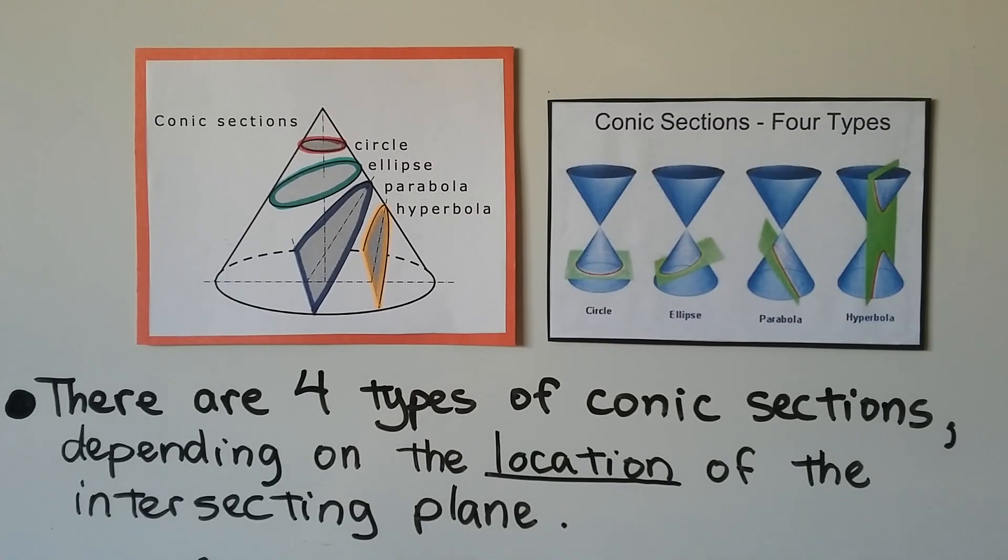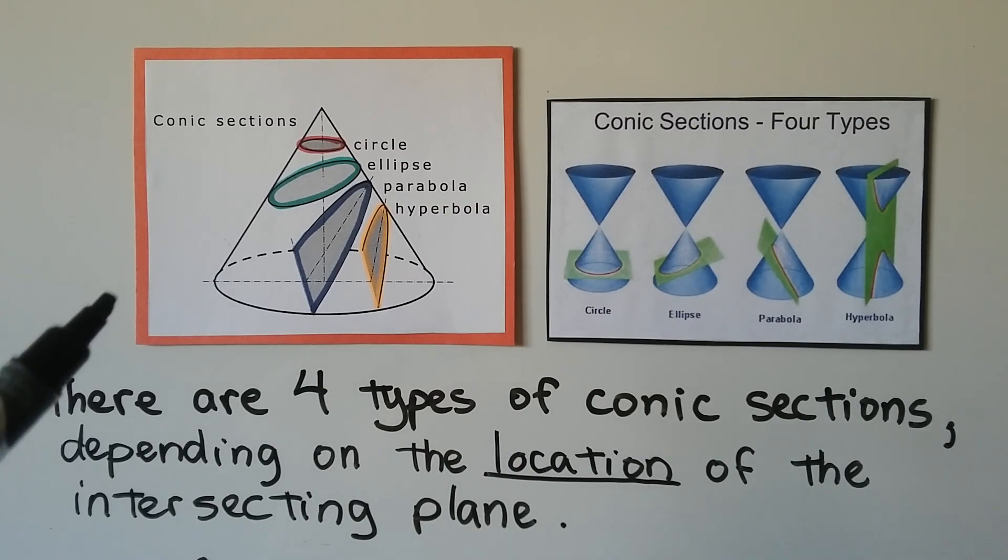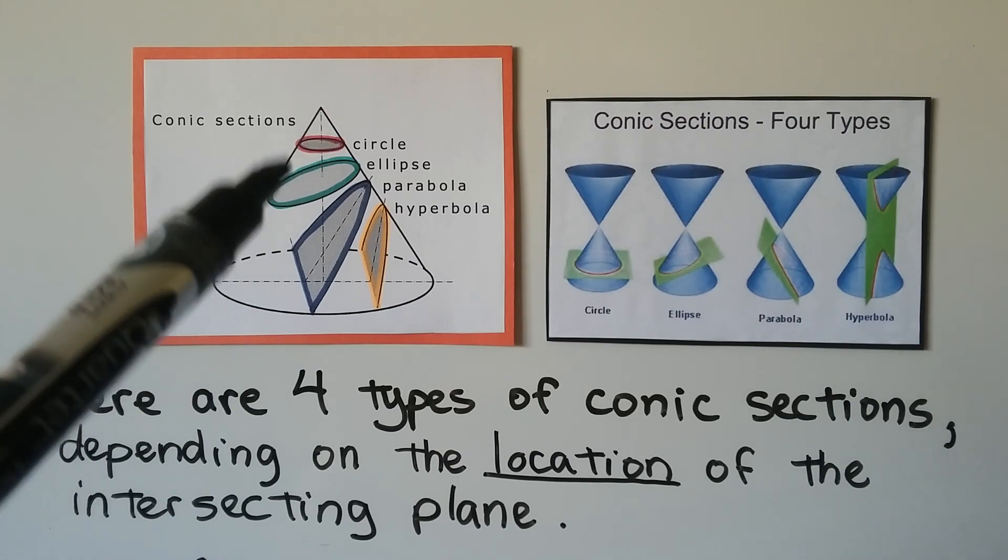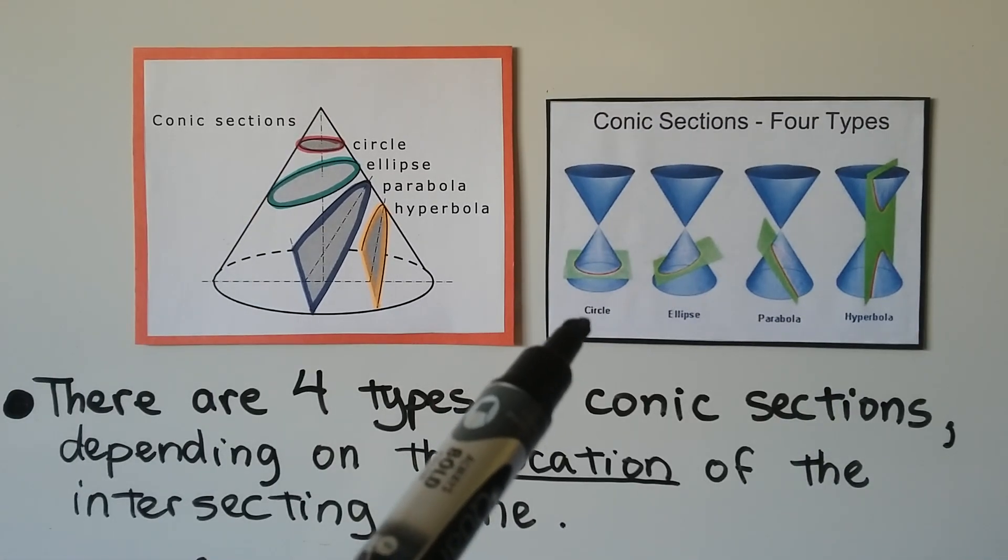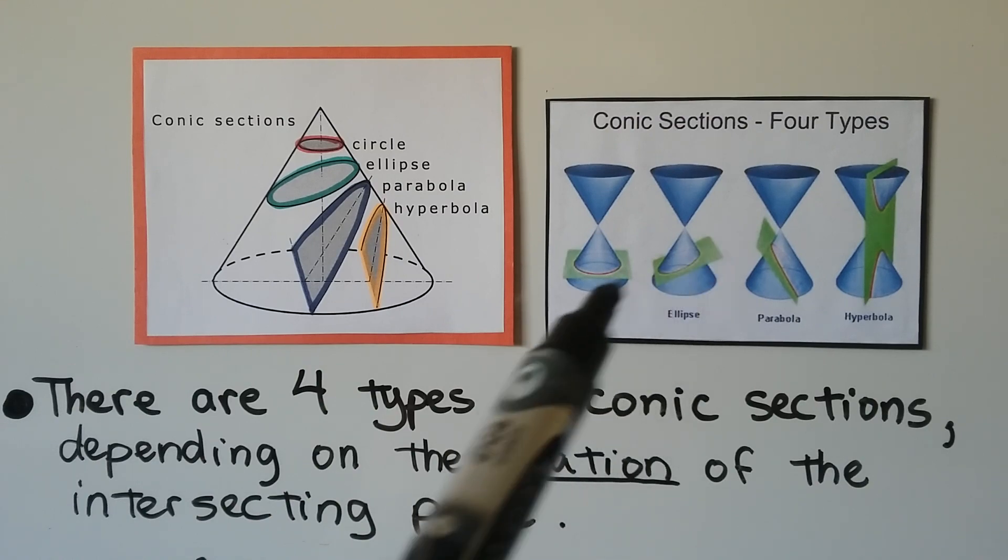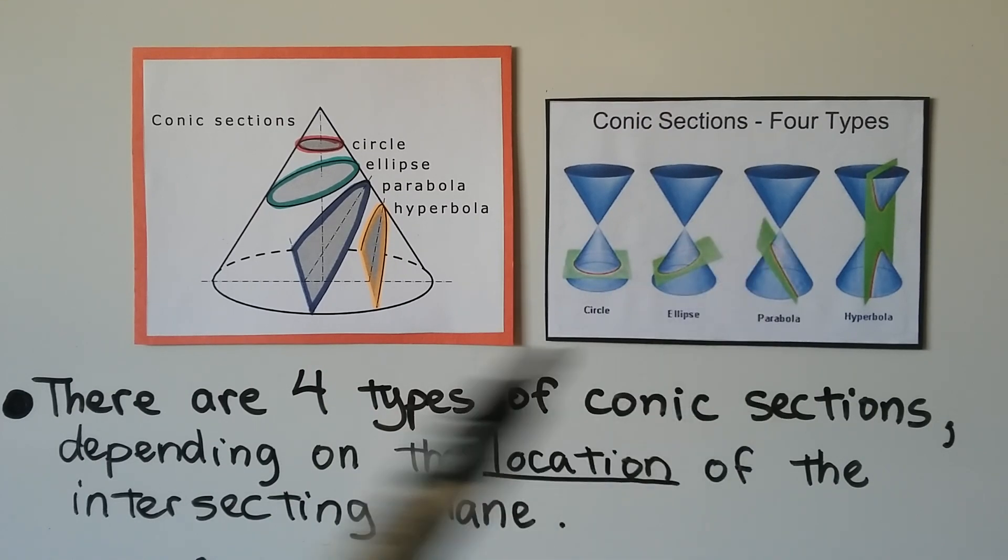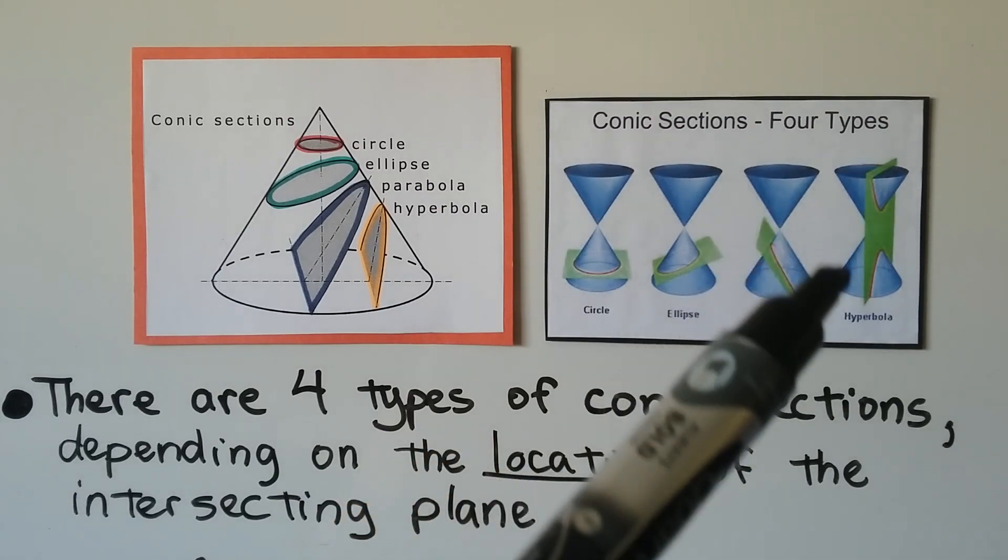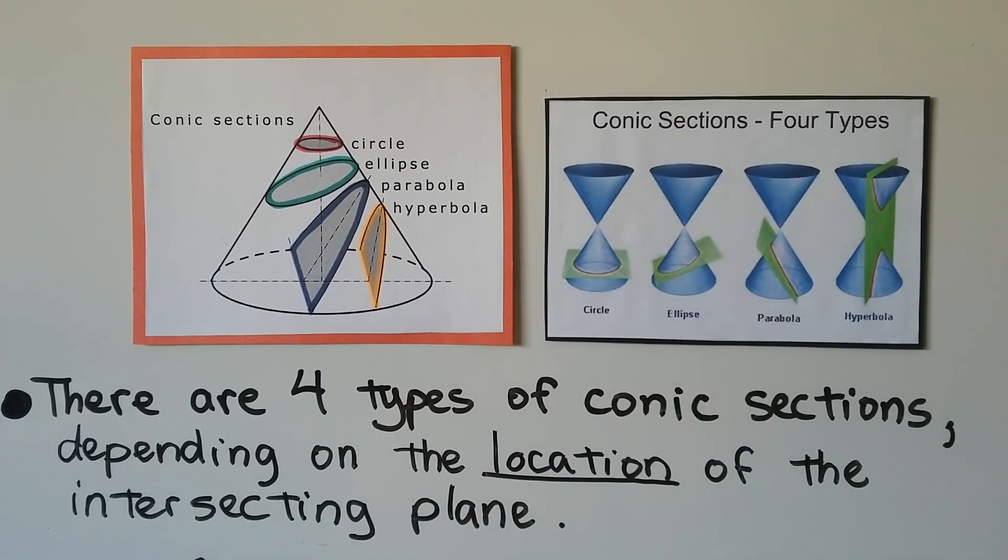For a cone, there's four types of conic sections depending on the location of the intersecting plane. So depending on the slant of the plane, we could have a circle if it's parallel to the base, we could have an ellipse, we could have a parabola, that's this one, we could also have a hyperbola if we slice it coming down like this.